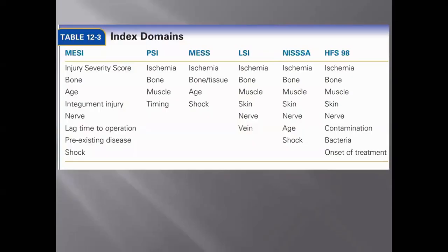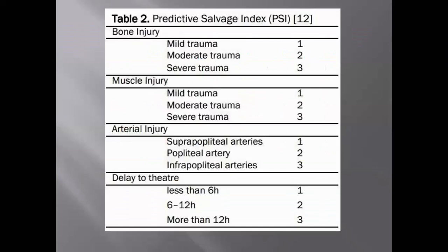So other scoring systems were formed. The first is the Mangled Extremity Syndrome Index (MESI), formulated based on a retrospective study conducted on 17 patients over 3 years. When the score is less than 20, the limb is considered salvageable. The second scoring system is the Predictive Salvage Index (PSI). When the score is less than 6, the limb is salvageable; if it is more than 6, amputation is advised.